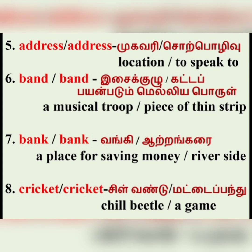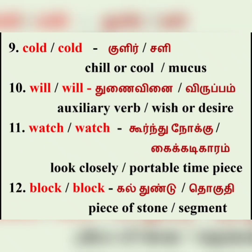Then 'bank' — one bank we know: we deposit and withdraw money. It's a place to safeguard our valuables and money. And the other one is river bank — a sandy surface surrounding the river, called a river bank. Then 'cricket' — one cricket is a bug or a beetle. The other cricket is a game.